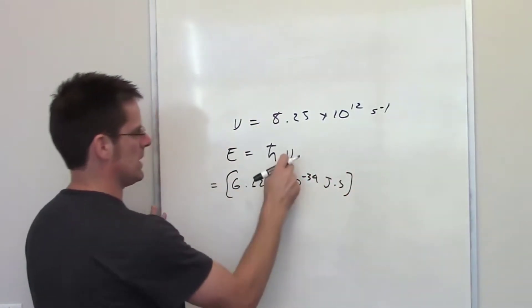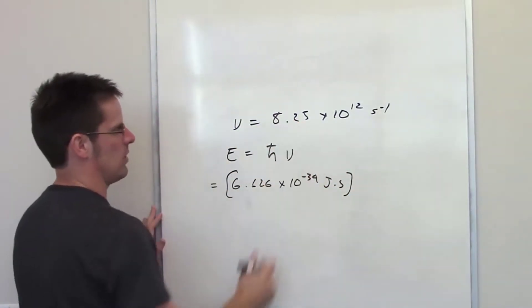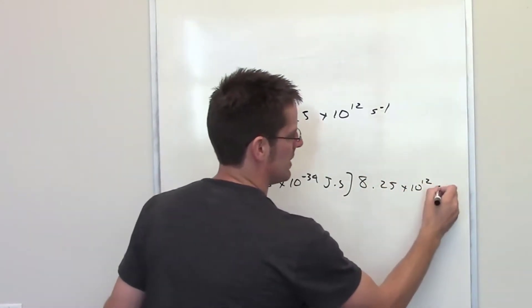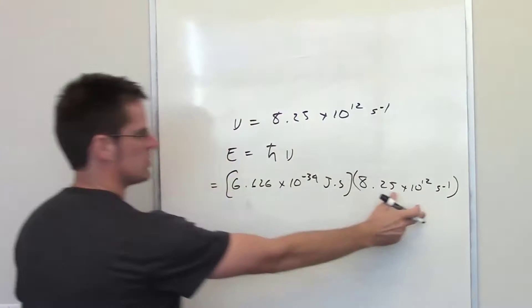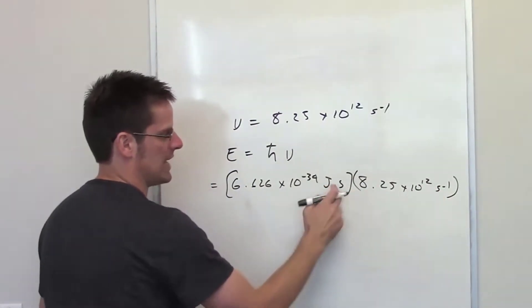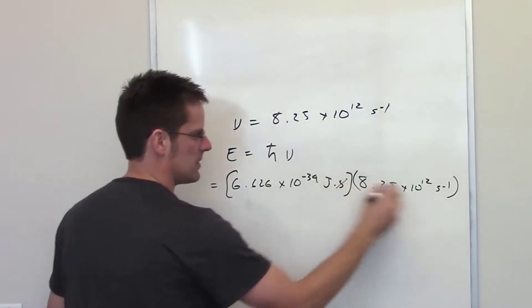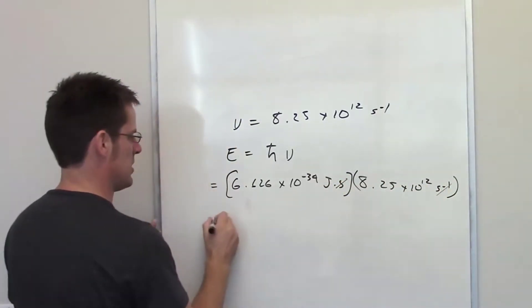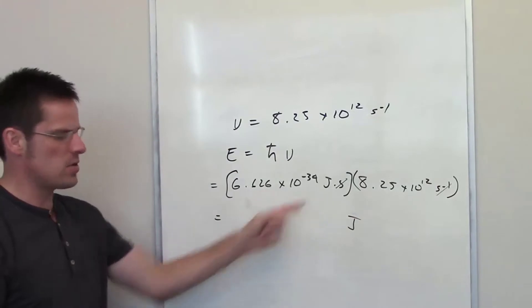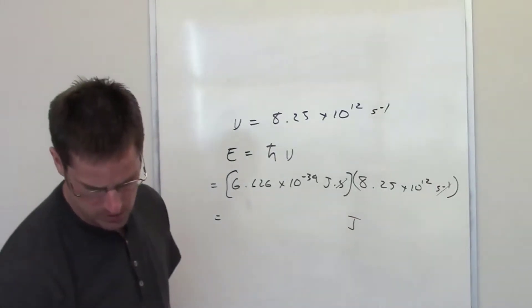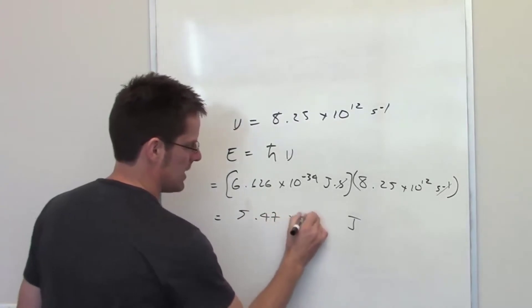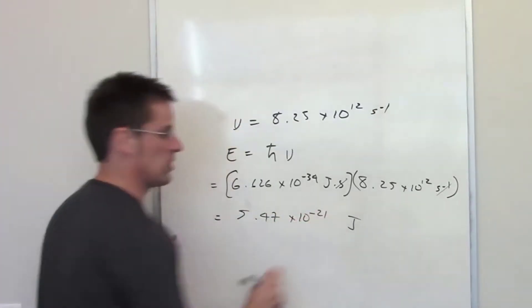We substitute in nu for our frequency: 8.25 times 10 to the 12th inverse seconds. The inverse seconds — which is really seconds in the denominator — cancel out the seconds in Planck's constant, leaving units of joules, which are indeed units of energy. You throw that in your calculator and the final answer comes out to be 5.47 times 10 to the negative 21st joules.